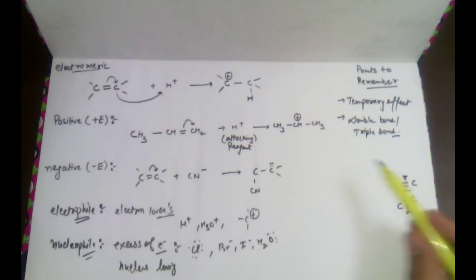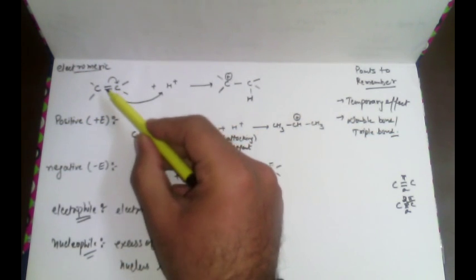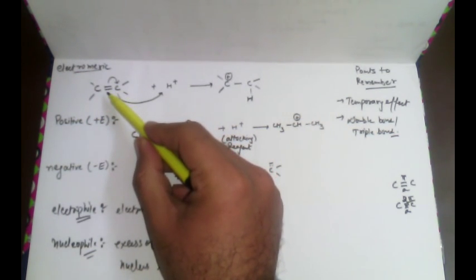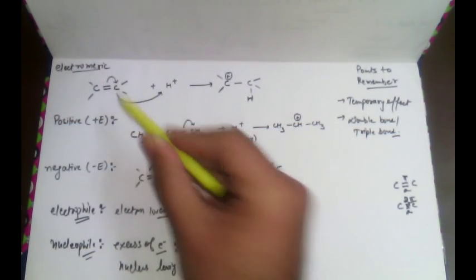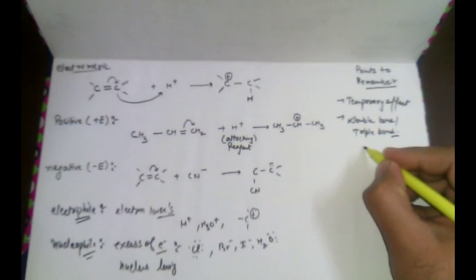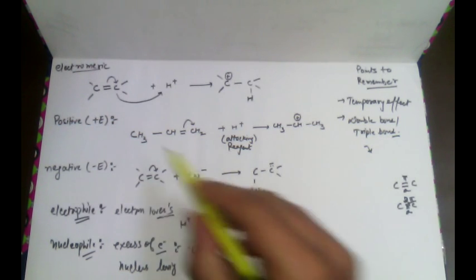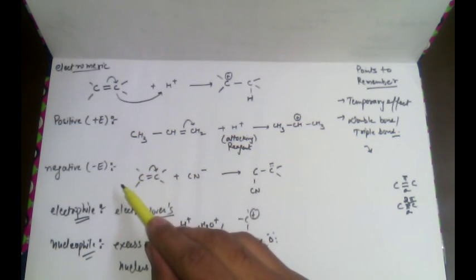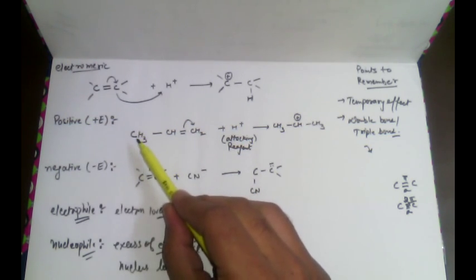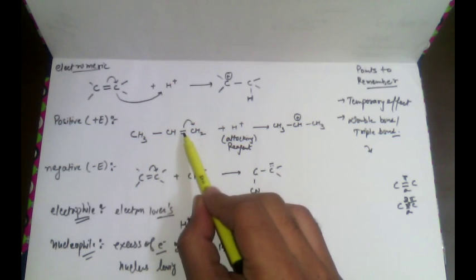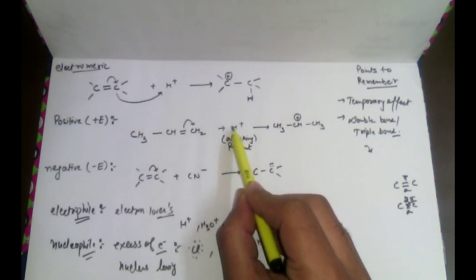The electromeric effect is a complete transfer of the shared pair of pi electrons from one atom on the demand of the attacking reagent. It is represented by a complete curved arrow. It is of two types: positive and negative. In the positive electromeric effect, the pi electrons of the multiple bond are transferred to the atom to which the attacking reagent is attached.